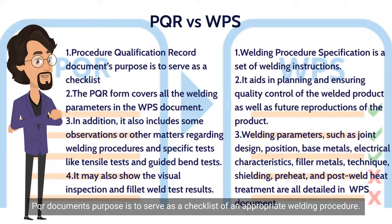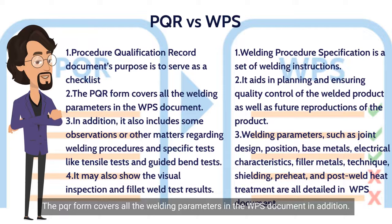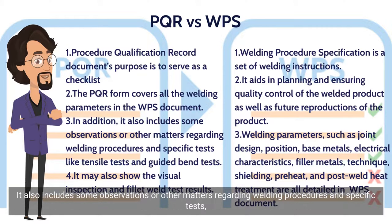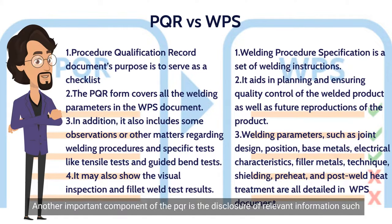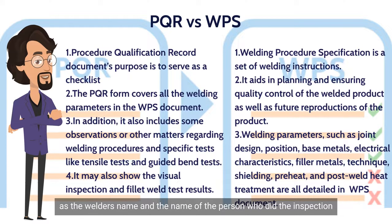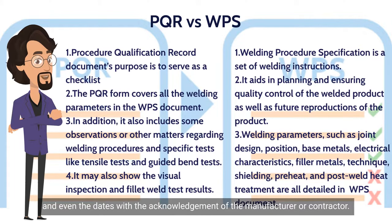The PQR document's purpose is to serve as a checklist of an appropriate welding procedure. The PQR form covers all the welding parameters in the WPS document. In addition, it also includes some observations or other matters regarding welding procedures and specific tests like tensile tests and guided bend tests. Another important component of the PQR is the disclosure of relevant information, such as the welder's name, the name of the person who did the inspection, and even the dates with the acknowledgement of the manufacturer or contractor.